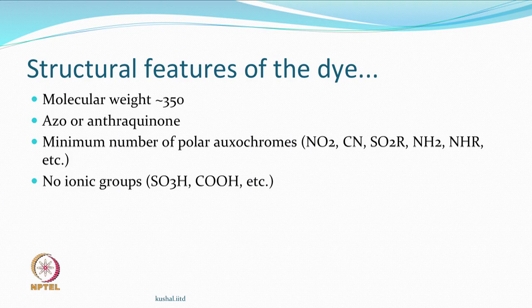Some other things, based on experiments: if the molecular weight is very high, it is also high energy. If it is very low, in the range of 200–250, then it is low energy. Somewhere in the moderate range around 350 — not an exact number — is where people prefer the molecule size. The dyes could be azo or anthraquinone, which is what dispersed dyes are made from. An important auxochrome requirement is that they should have a minimum number of polar groups — polarity should be less, non-polarity is better.